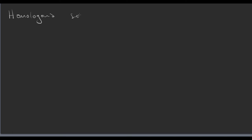In this lesson we're going to look at a homologous series. If you remember back to one of the early lessons, a homologous series is a series of organic molecules that only differ by the number of carbon atoms they have in them. The simplest family are called the alkanes, and that's what we're going to look at today.